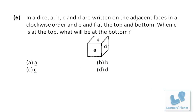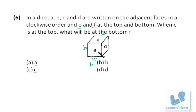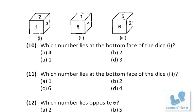This question: in a dice, a, b, c, d are written on adjacent faces in a clockwise order — here b, here c, this is d. E and F are at the top and bottom. When c is at the top, what will be at the bottom? The alphabet opposite to c is a. Try the next question on your own.